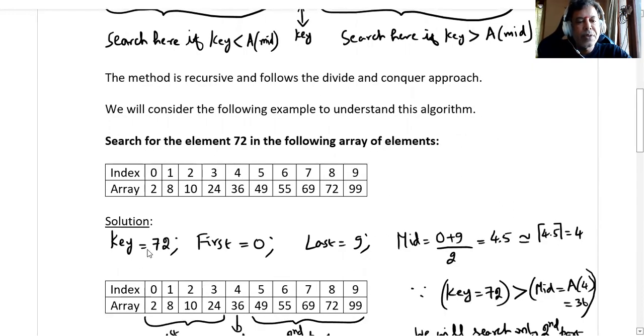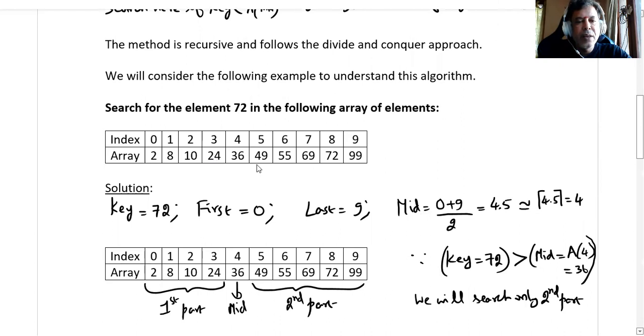The key element we have to search is 72. First index is 0, last index is 9. That means the mid will be (0 + 9) / 2, which gives you 4.5, but we consider the truncated value or the floor value of 4.5, which is 4. That means we divide the whole array keeping 4 as the mid value.